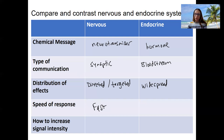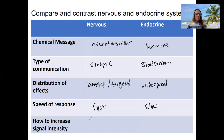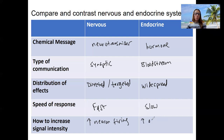For speed: the nervous system is fast — action potentials are like electricity. Hormones travel through the bloodstream, which takes longer, so effects are slower. For how to increase signal intensity: in the nervous system, you increase neuron firing — the action potentials that are fired. In the endocrine system, you increase the amount of hormone released. Those are the two different mechanisms used to increase signal intensity.